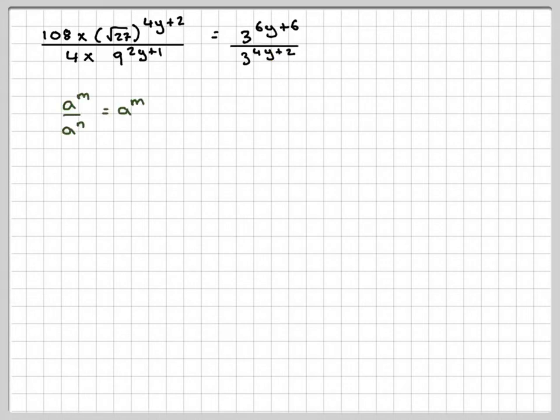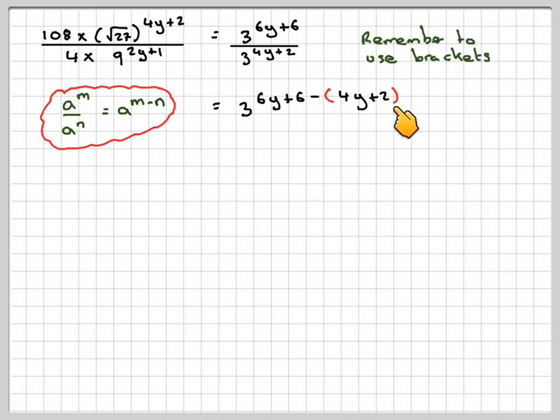Now applying this rule of indices, which is a to the m divided by a to the n is a to the m minus n, means we can now rewrite this as 3 to the 6y plus 6. And then this power here we can now subtract. But when we subtract, we need to remember to use brackets because we're taking all of it away.